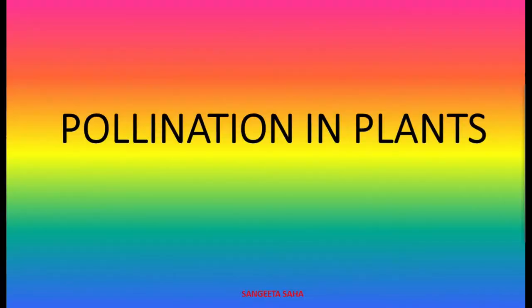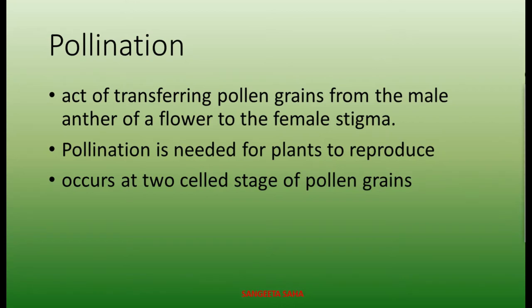Hello students. In the previous lesson we have already learned how male and female gametes are formed. In today's lesson we are going to learn about pollination, which is said to be the first process of sexual fertilization in the flowering plants. Pollination is basically the transfer of pollen grains from the anther of one flower to the stigma of the same or another flower, and it occurs at the two-celled stage of pollen grains.